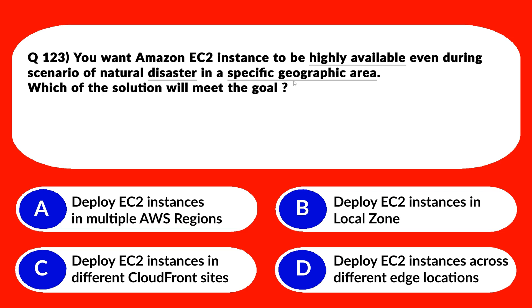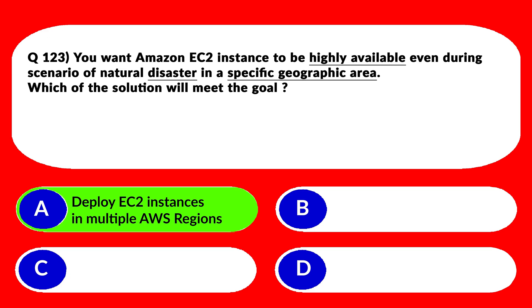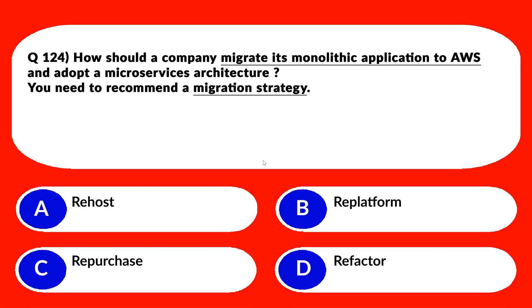Whenever you see questions related to high availability, look for options containing different availability zones. An even better option would be different AWS regions, because even if a natural disaster hits a specific geographic region like the US, and you have a backup in a different region like India, the solution will be highly available. We'll keep option A because it mentions multiple AWS regions and lock it as the correct answer.